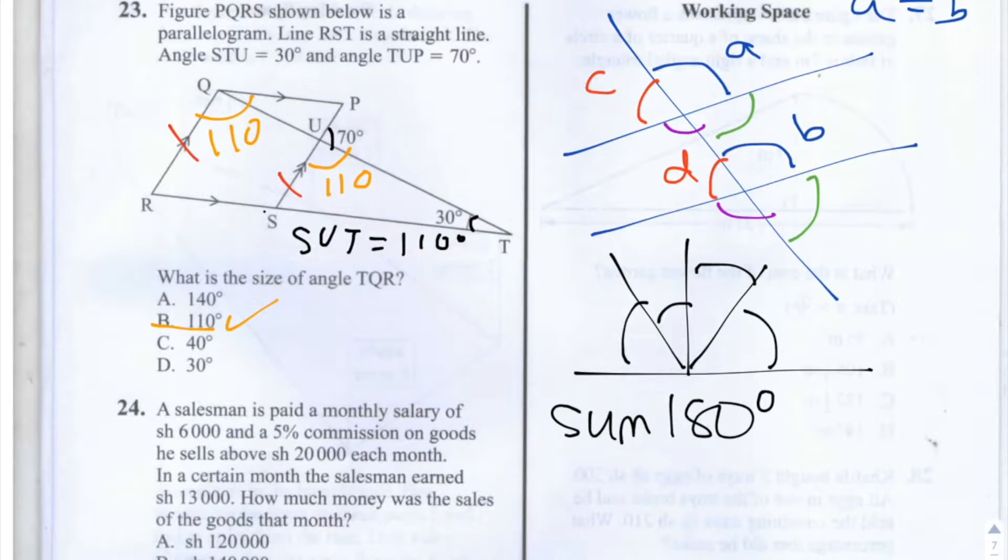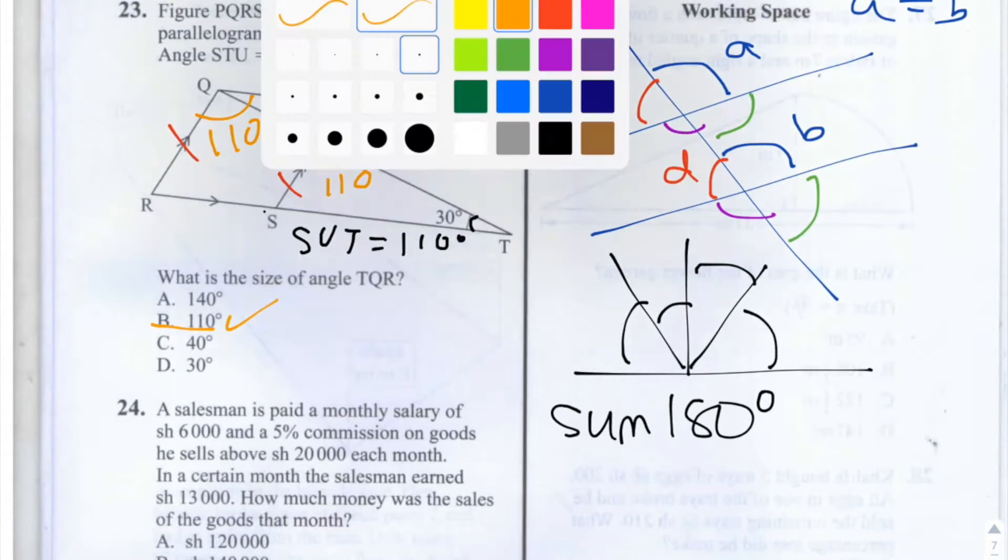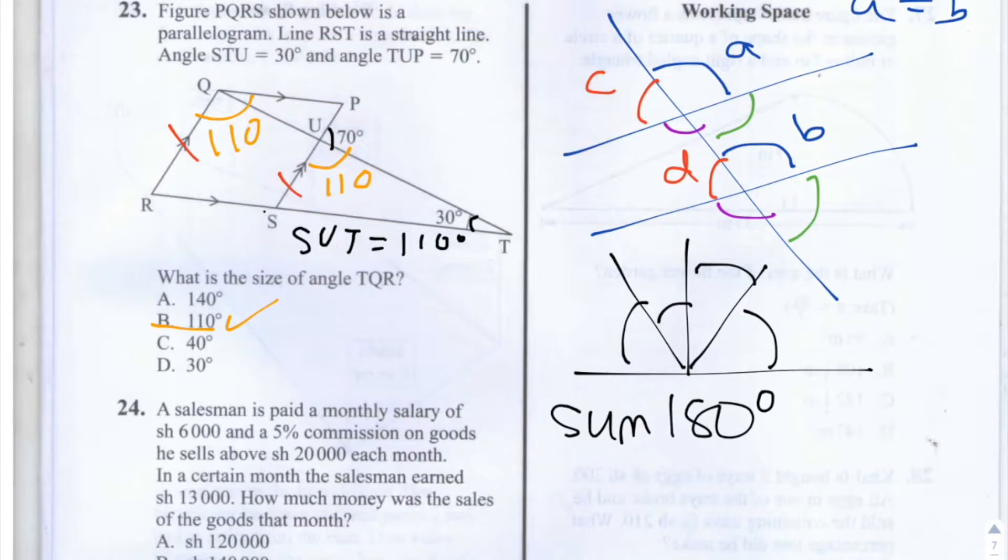That's the easiest way of solving this and finding the answer, but there are other ways which are longer. As long as you know that rule, it can really save you some time. Another way of doing it is first working out the 110 of SUT.